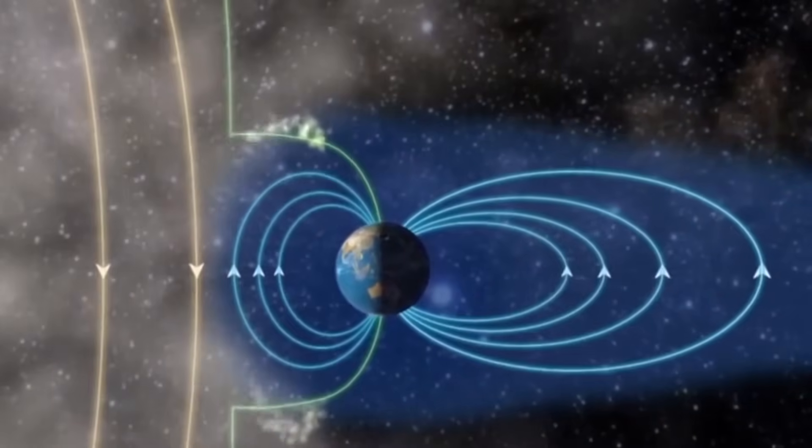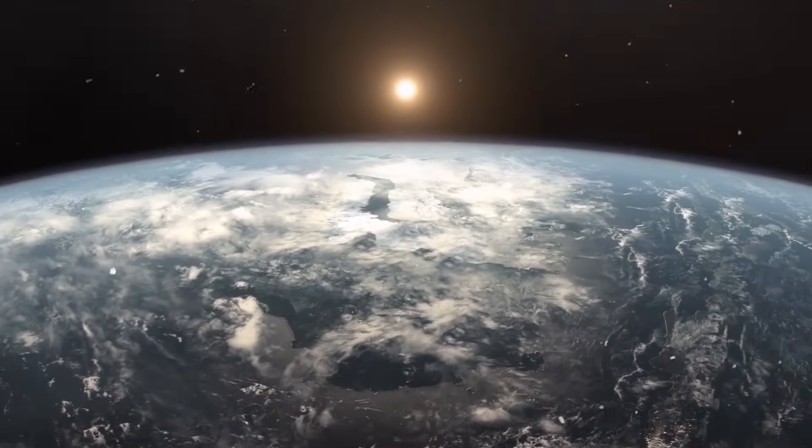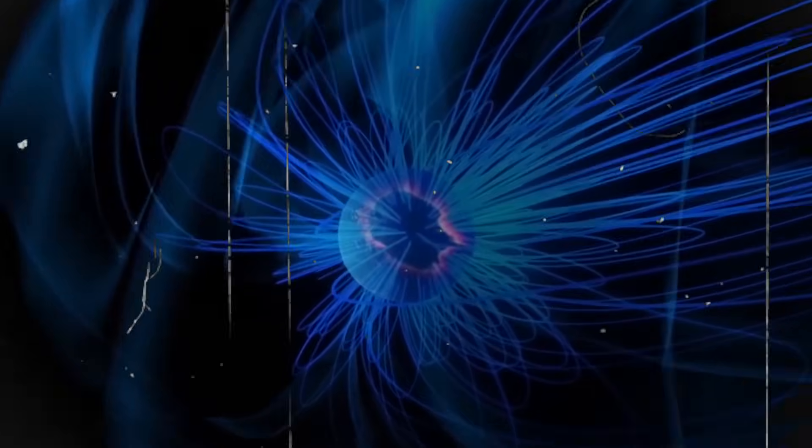This movement, along with Earth's rotation, generates electric currents within the liquid metal, giving rise to the magnetic field that extends into space, forming the magnetosphere.